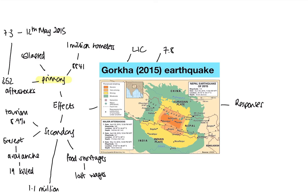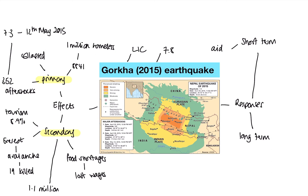Primary effects are things that happened straight away; secondary effects are knock-on consequences of something else. In the exam, they might ask you to weigh up whether primary effects were worse than secondary effects, or vice versa. Moving to responses, we can break these down into short term and long term. The first short-term response was international aid: the UK Disaster Emergency Committee raised $126 million to support the Nepal economy.